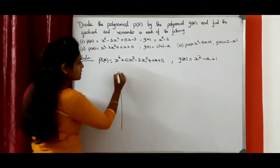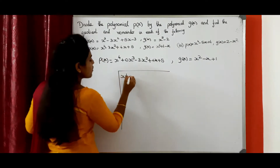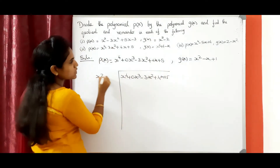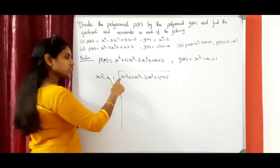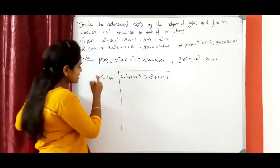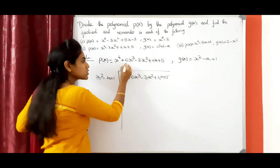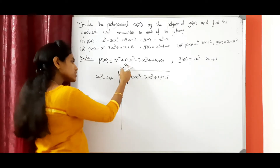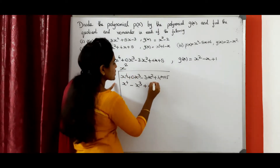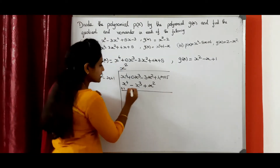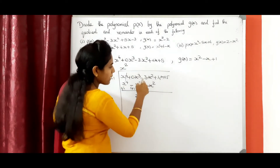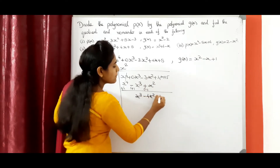Next, we can do the long division method. X power 4 plus 0 X cube minus 3 X square plus 4 X plus 5. G of X equal to X square minus X plus 1. We need to eliminate the first term, so we need X power 4. Here X power 4 is there; the first term of G(x) is X square. So which term do we need to multiply? X square. X square into X square gives X power 4. X square into minus X gives minus X cube. X square into 1 gives plus X square. Next, we need to change the sign. Now we can cancel. The X power 4 cancels, and minus 3 X square minus X square gives minus 4 X square plus 4 X plus 5.